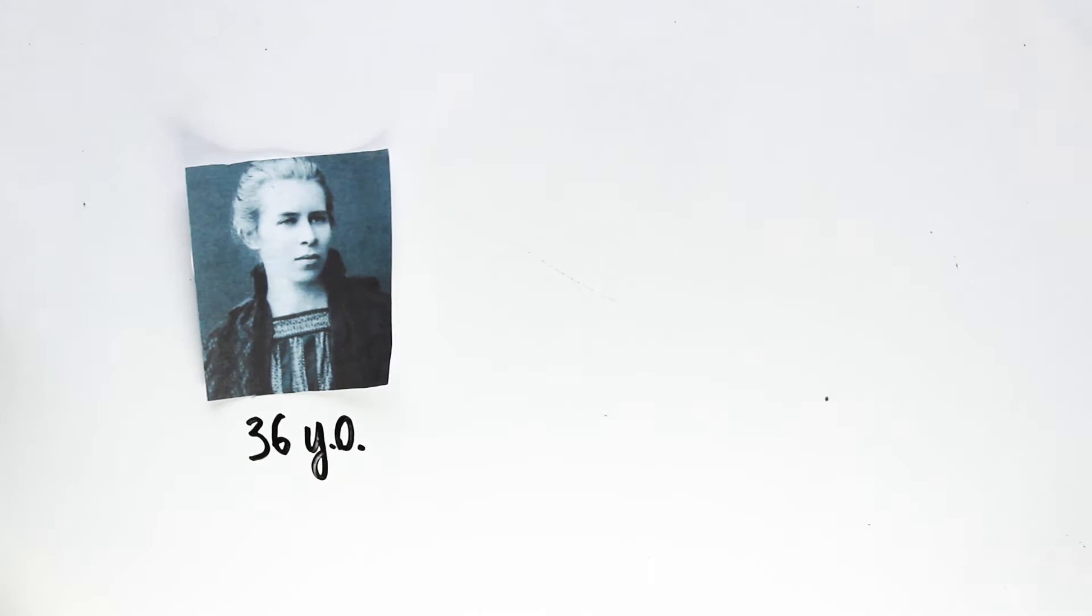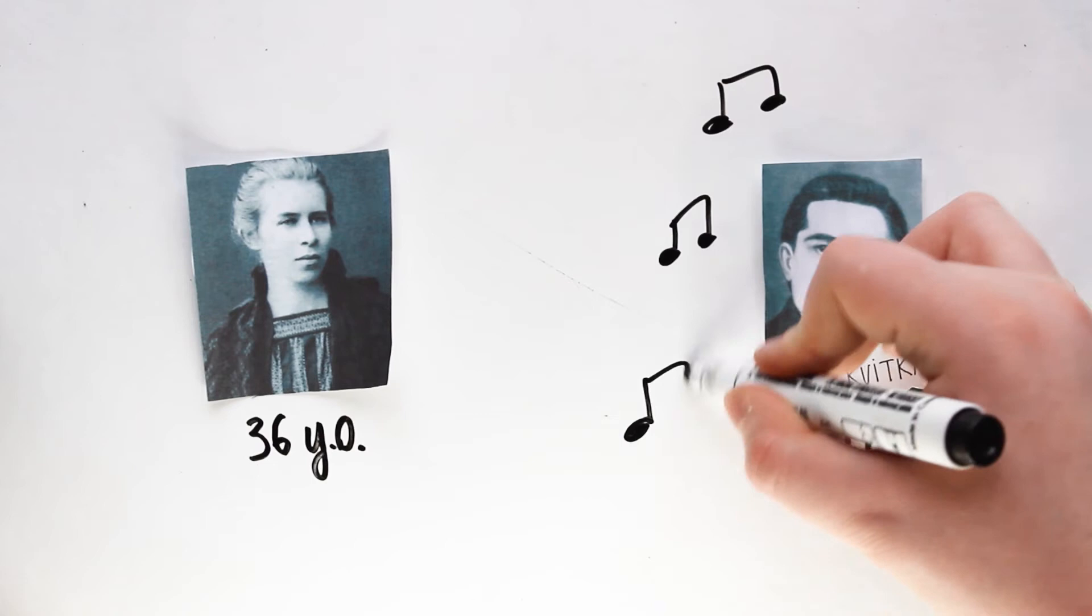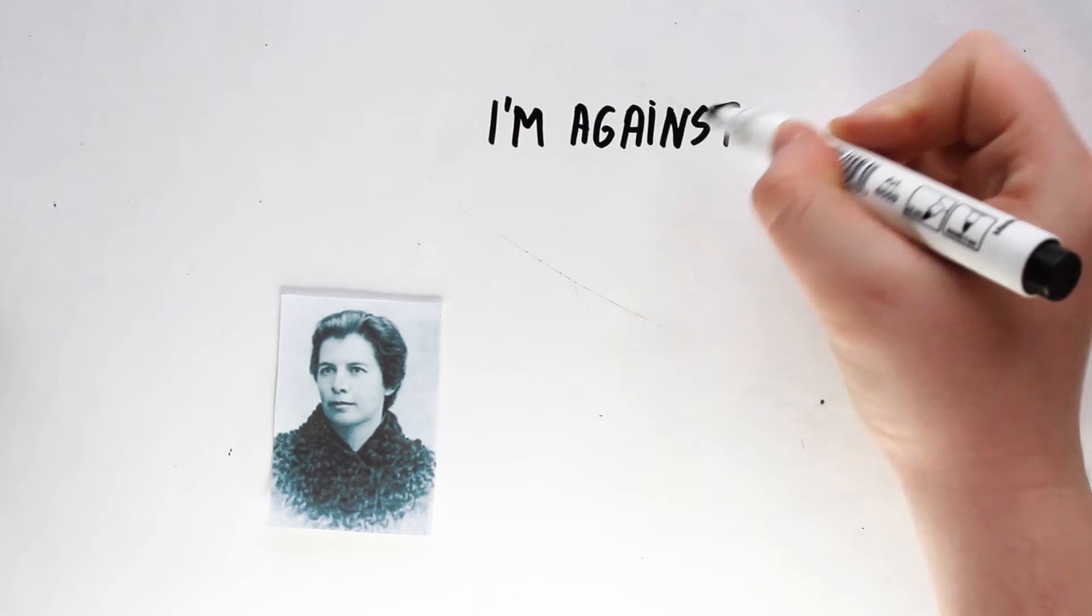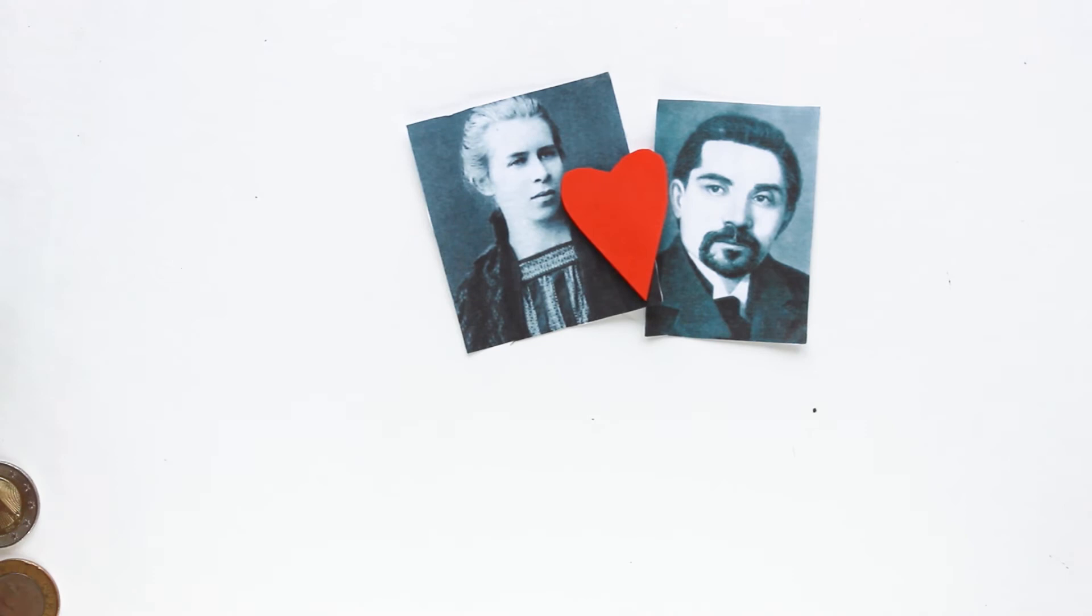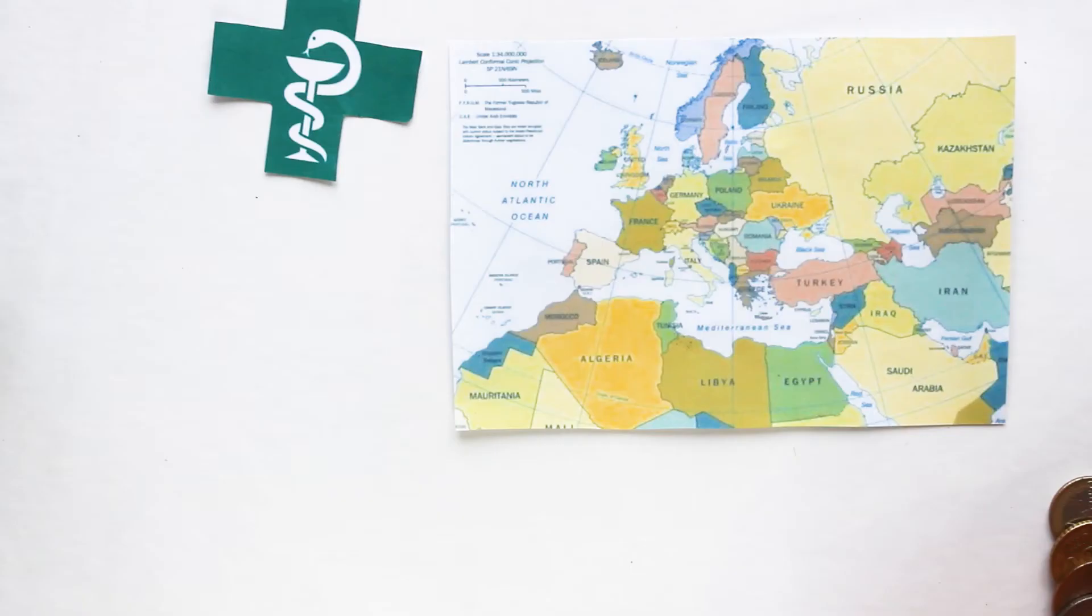At the age of thirty-six, Lesya Ukrainka fell in love with Clement Kvitka, who was a music scholar and collector of folklore. Despite the fact that the poet's mother was against this union, the man proved the sincerity of his feelings over and over again, selling everything to treat his wife with the best foreign doctors in Egypt, Greece, Germany and Austria.